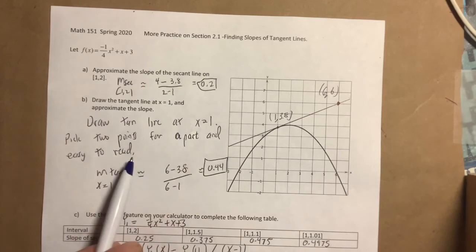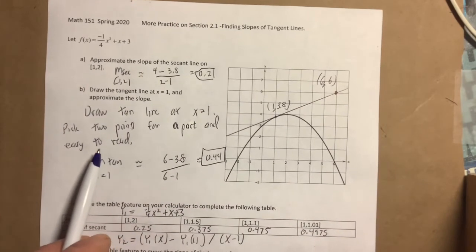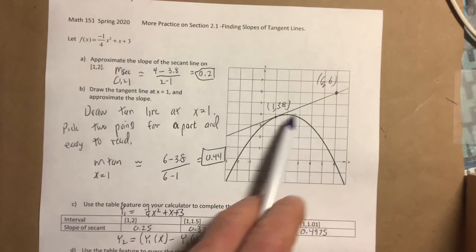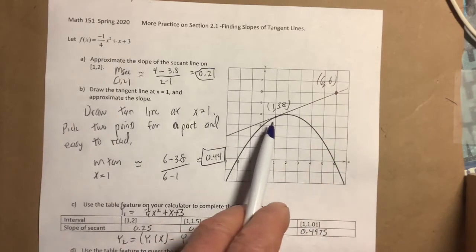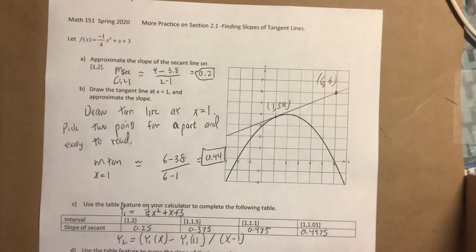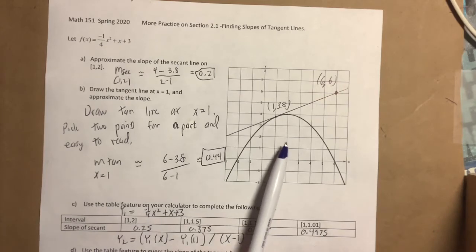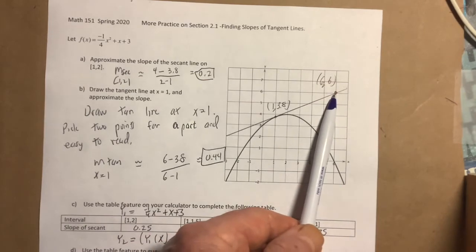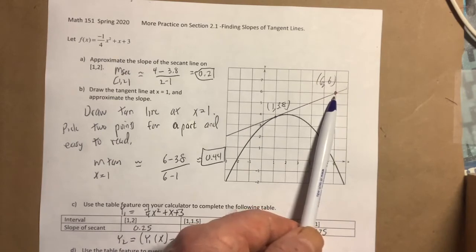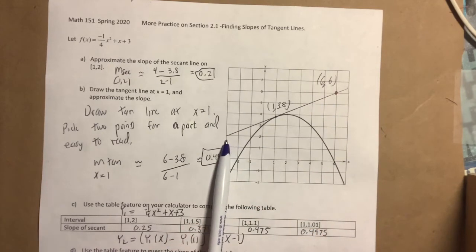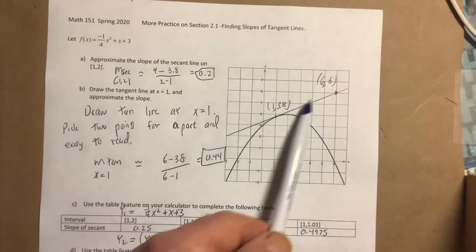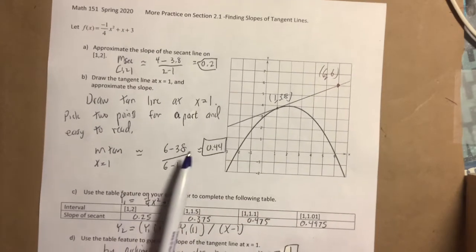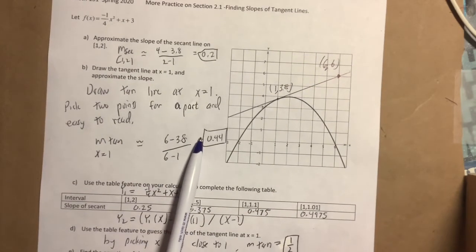Now what they want you to do is draw the tangent line at x equals one as best you can. Remember when you draw the tangent line, try to make it so it has the same slope as the curve does there. Once you do that, you're gonna want to find the slope. We talked about this in class—you don't want to pick points really close together because you really can't read them that well. It's better to pick points far apart and easy to read. That looks like it goes through about (6, 6). Once you get those two points, you can compute the slope. It looks like it's about 0.44—this is not exact, this is approximate.